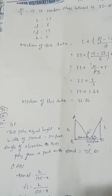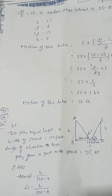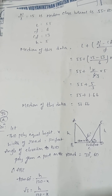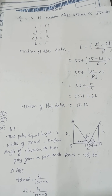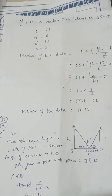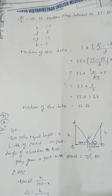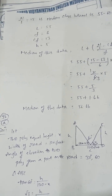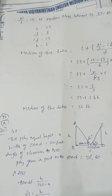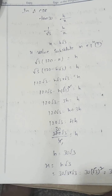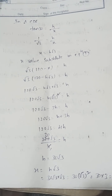Two poles of equal height stand on either side of a road of width 120 feet. A mirror on the road has angles of elevation of 60° and 30° to the tops of the poles. Let one distance be x and the other 120 − x. Applying trigonometric ratios: x = 90 and 120 − x = 30.